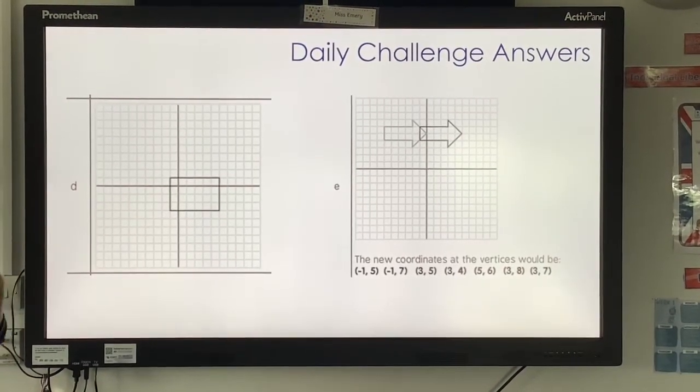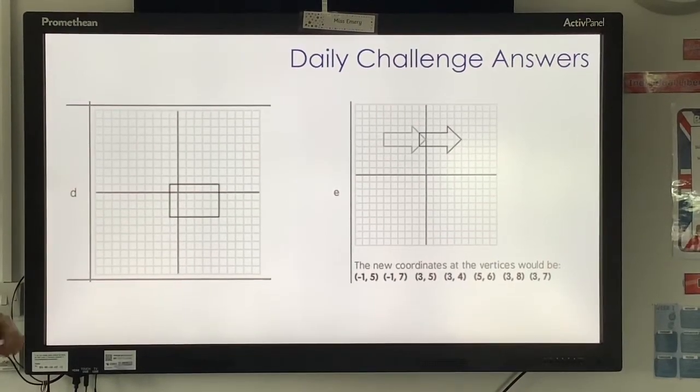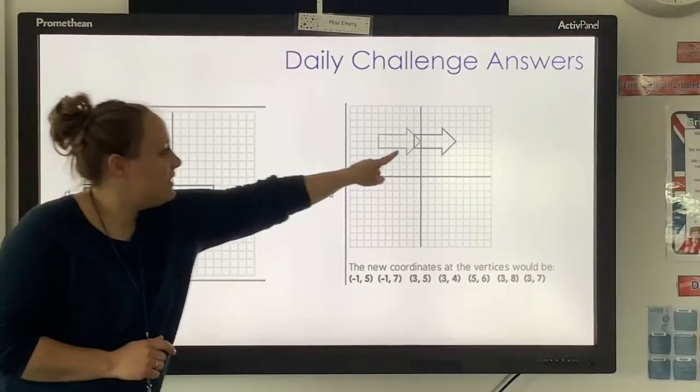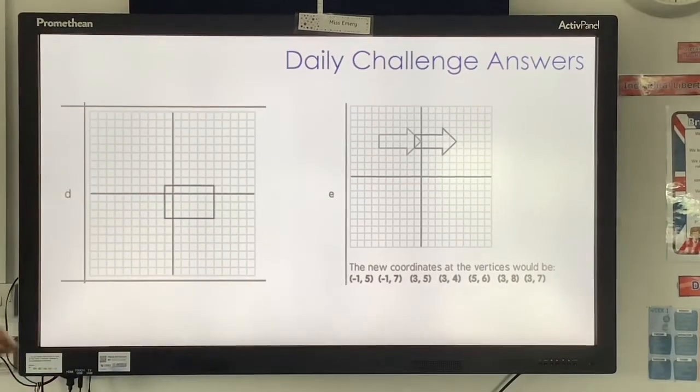Again, make sure you've got the X and Y around the right way or you would have a different shape. If you've got a different shape, check you didn't do that. So then this is our shape translated, five to the right.